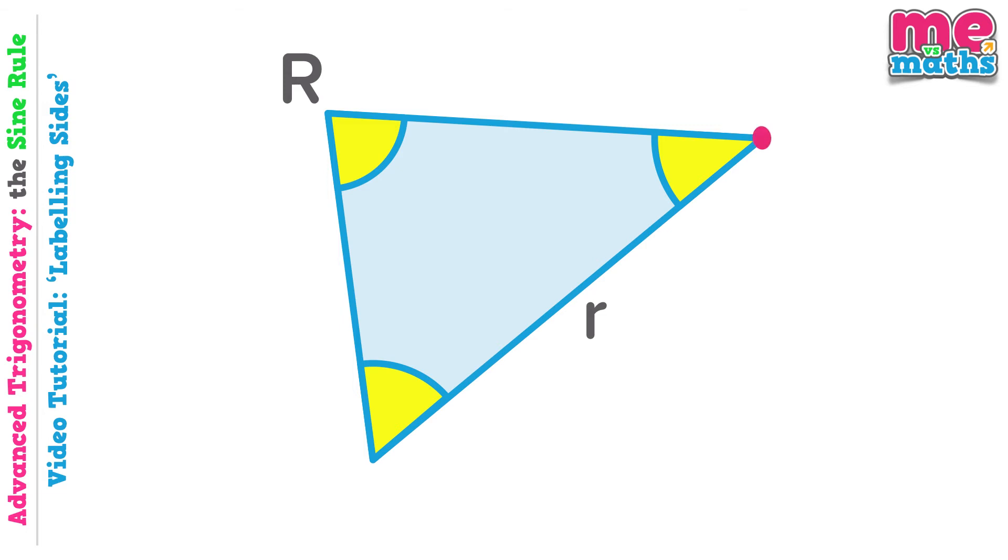If we go to this point next, we need to give it a name. Now we could call it anything, but as we've already got a point R, let's call this point S. Opposite angle S, we must have side s. And finally we have this point at the bottom which I'm going to call T. And opposite angle T will be side t.